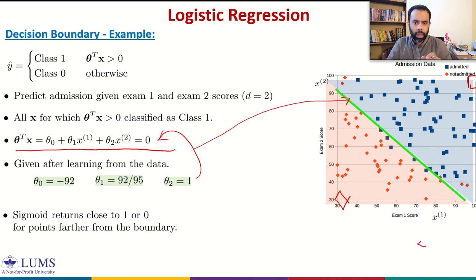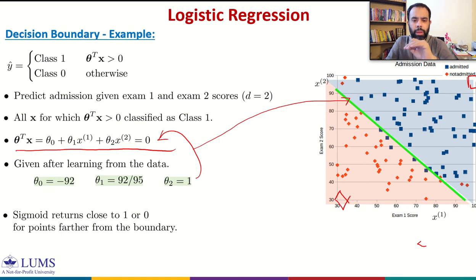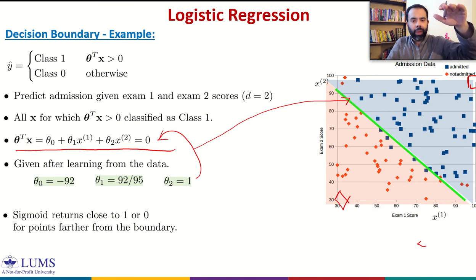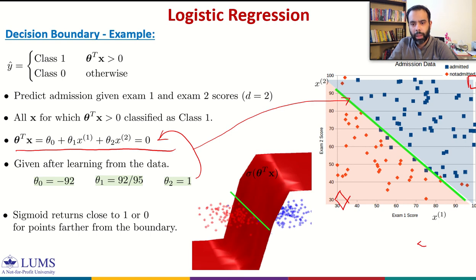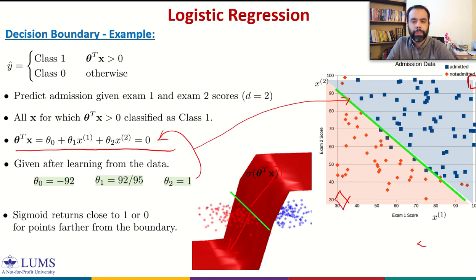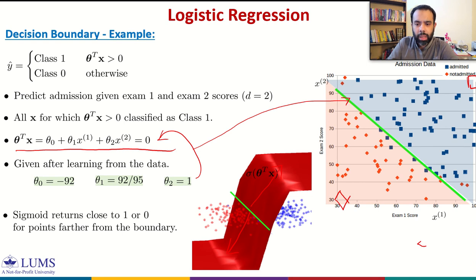If we visualize this in three-dimensional space by plotting the sigmoid function for different values of the first and second feature: we would have value 1 in the blue region, almost 0 in the red region, and 0.5 on the boundary line. Moving in one direction takes us into the blue half space; moving in the other direction takes us into the red half space. That's how logistic regression maps values versus distance from the decision boundary.